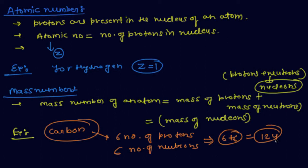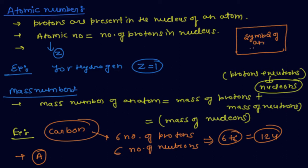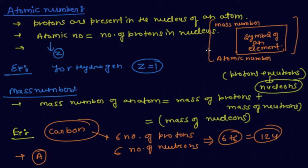Atoms are represented with a symbol of an element. Mass number is represented by capital A. The element symbol has mass number at the left top corner and atomic number at the left bottom. For example, sodium has mass number 23 and atomic number 11 — this is the representation of sodium.